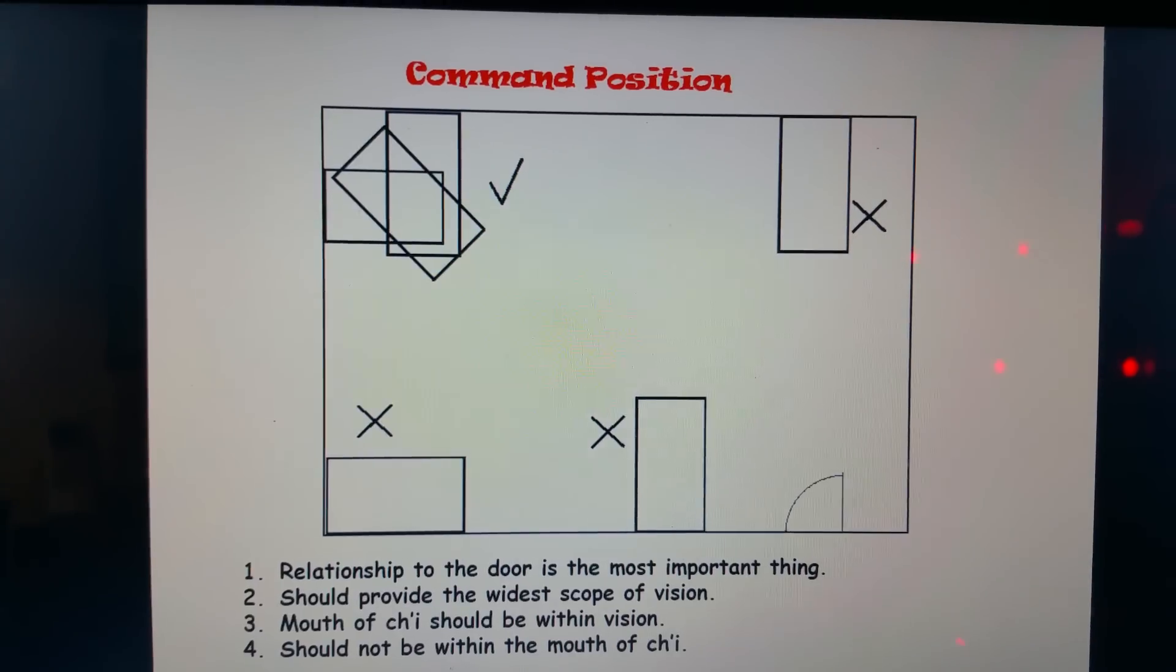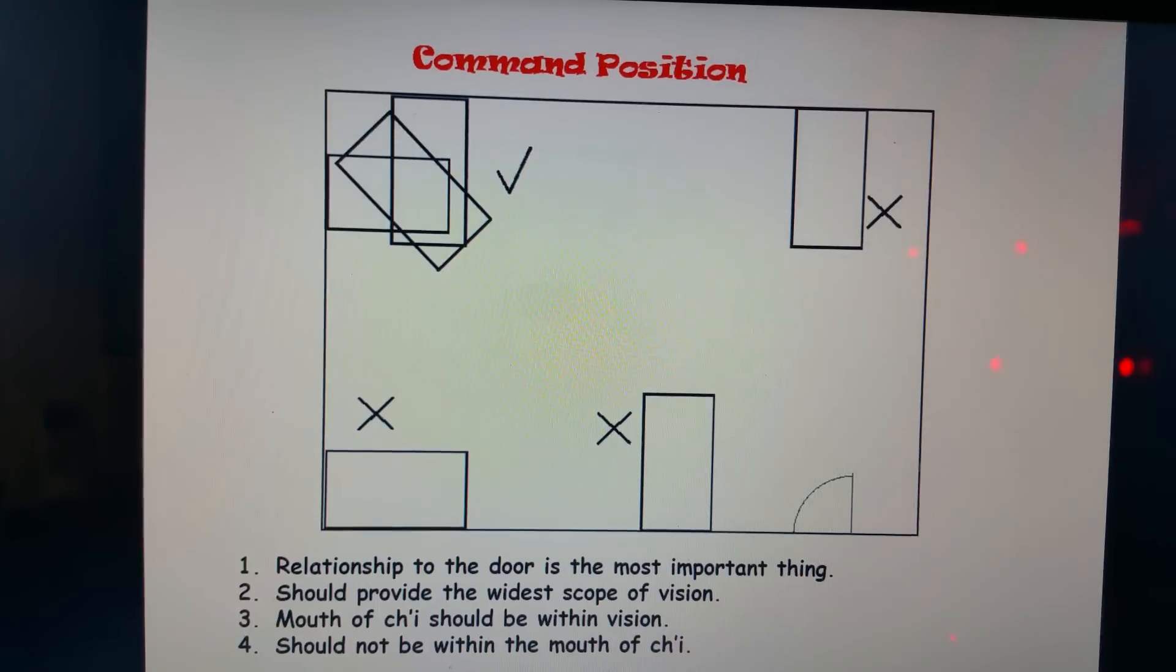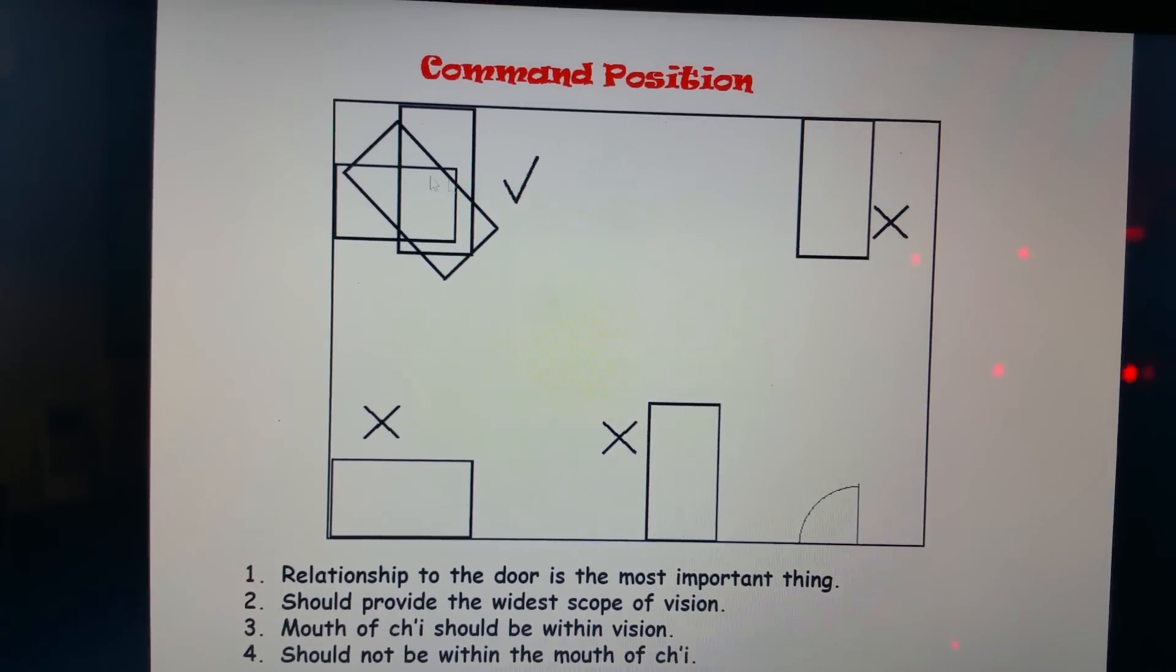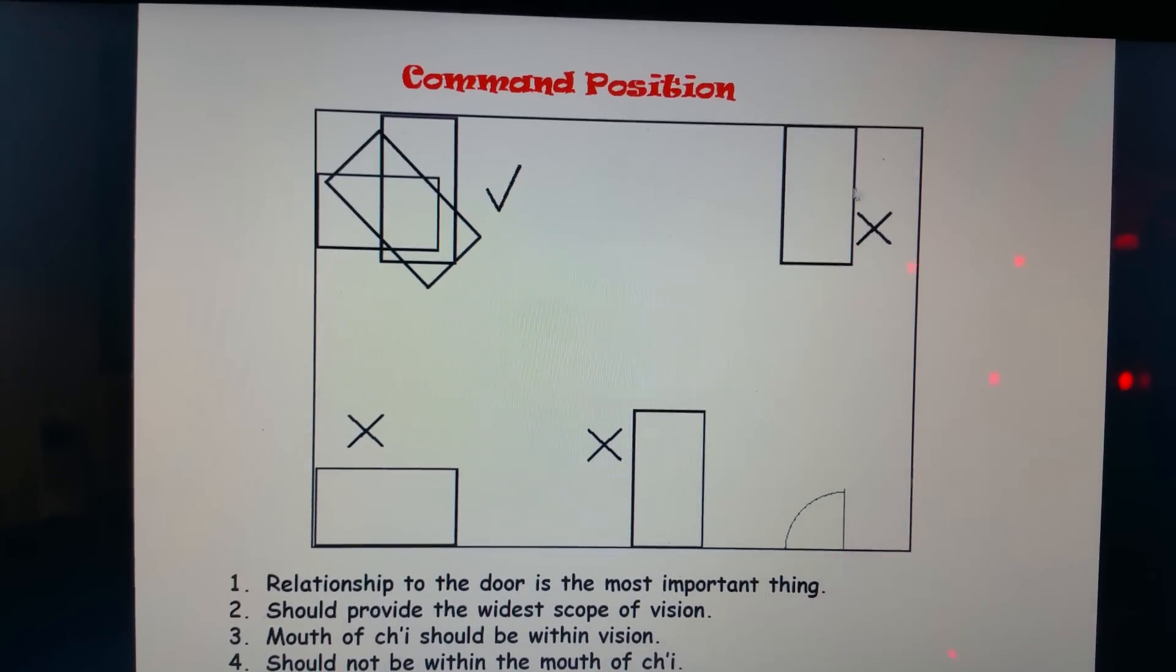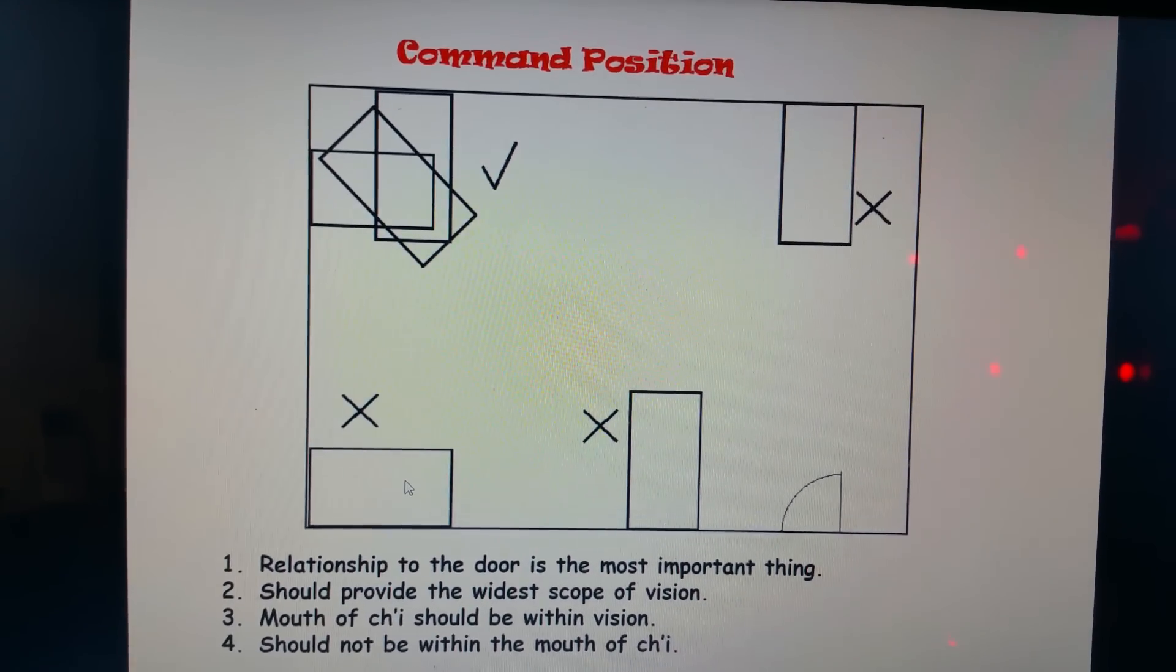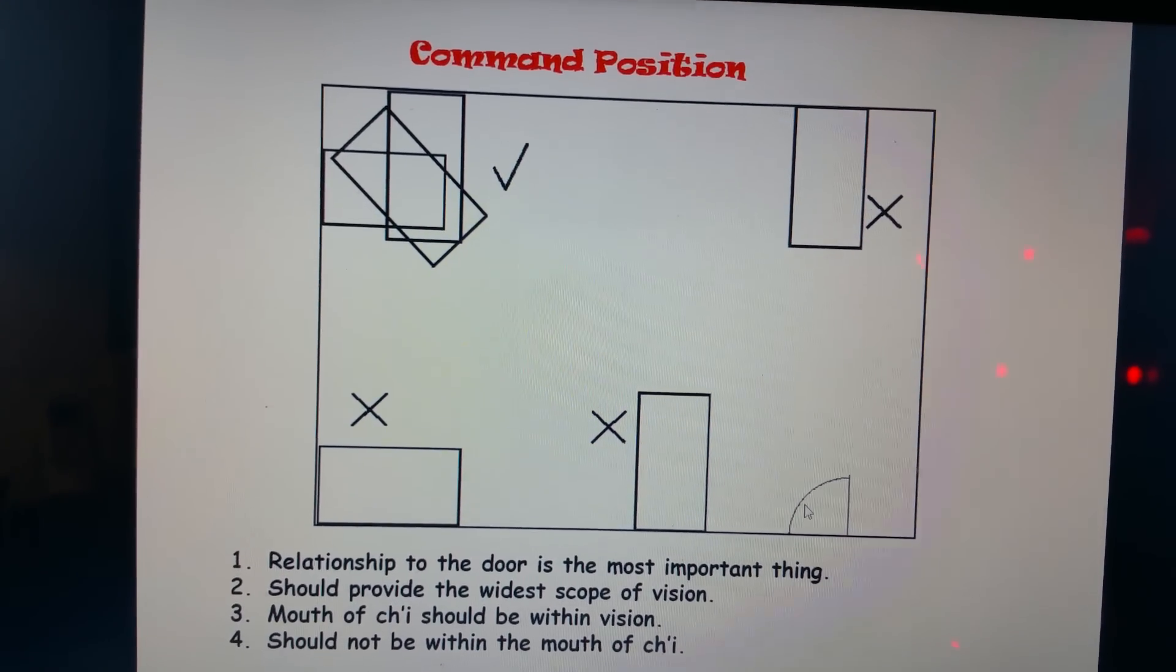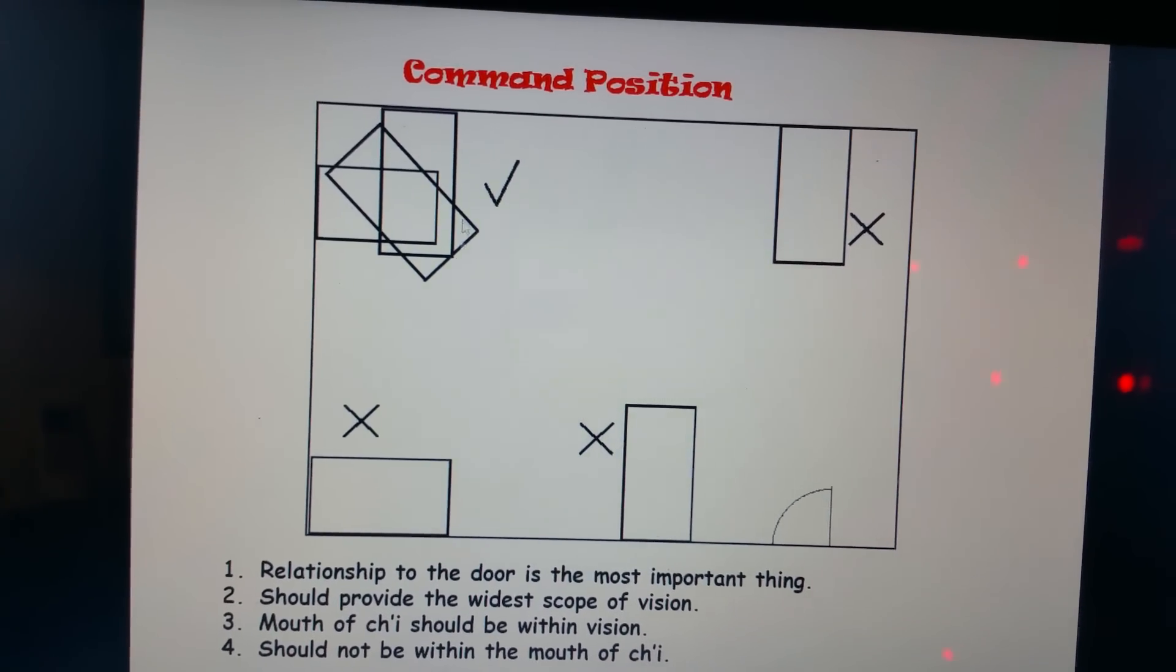And the important principle is that you should have the widest scope of vision. So in this corner, you can see that when you're in bed, you can see the entire room from your bed. Also, you should be able to see the mouth of qi. That gives you power and control over the door.